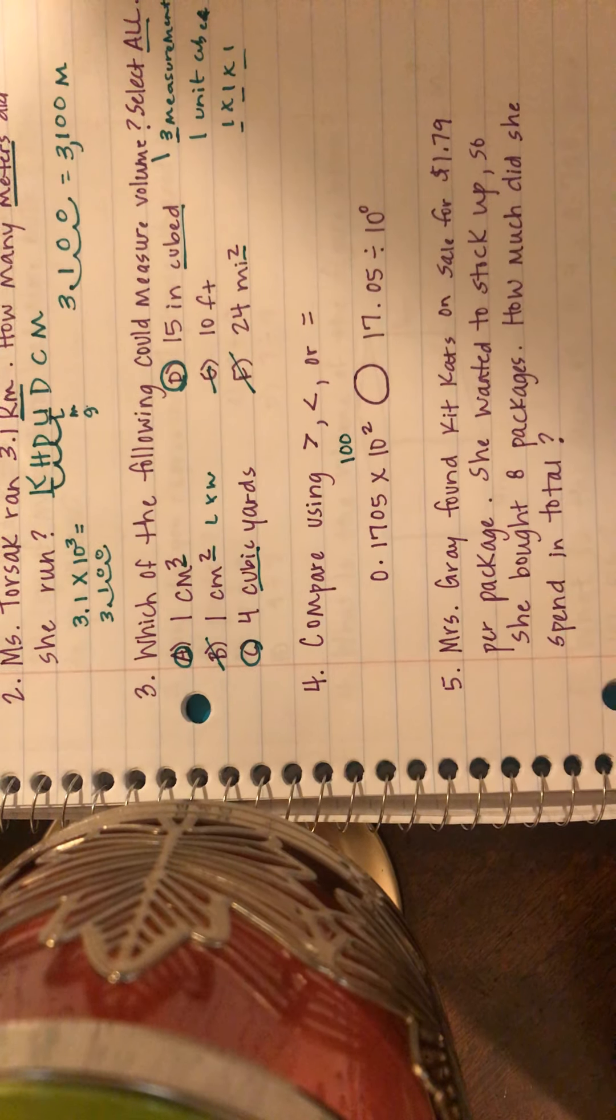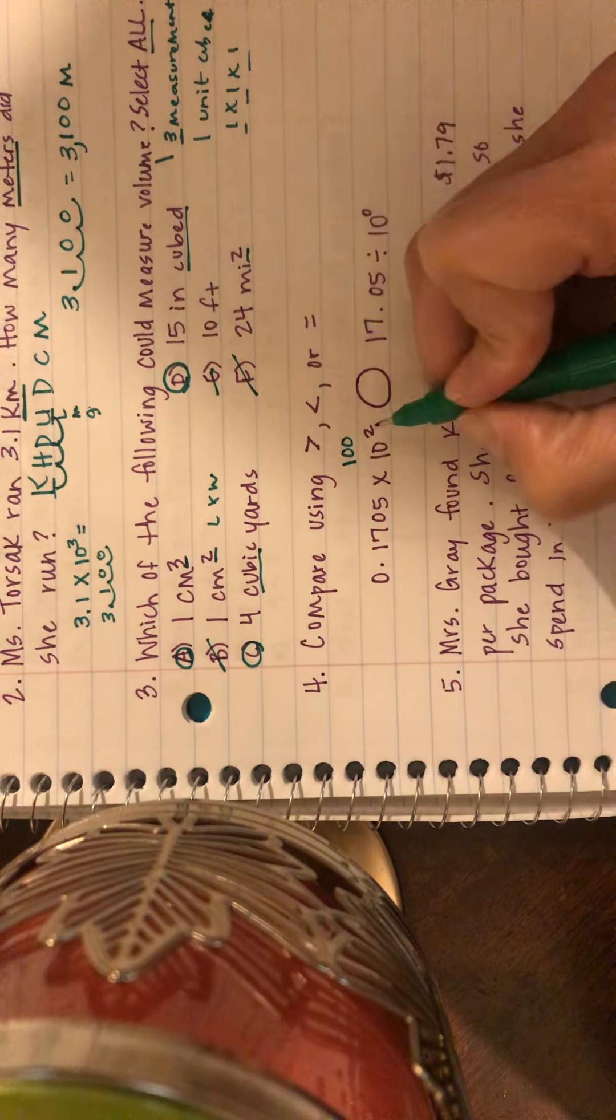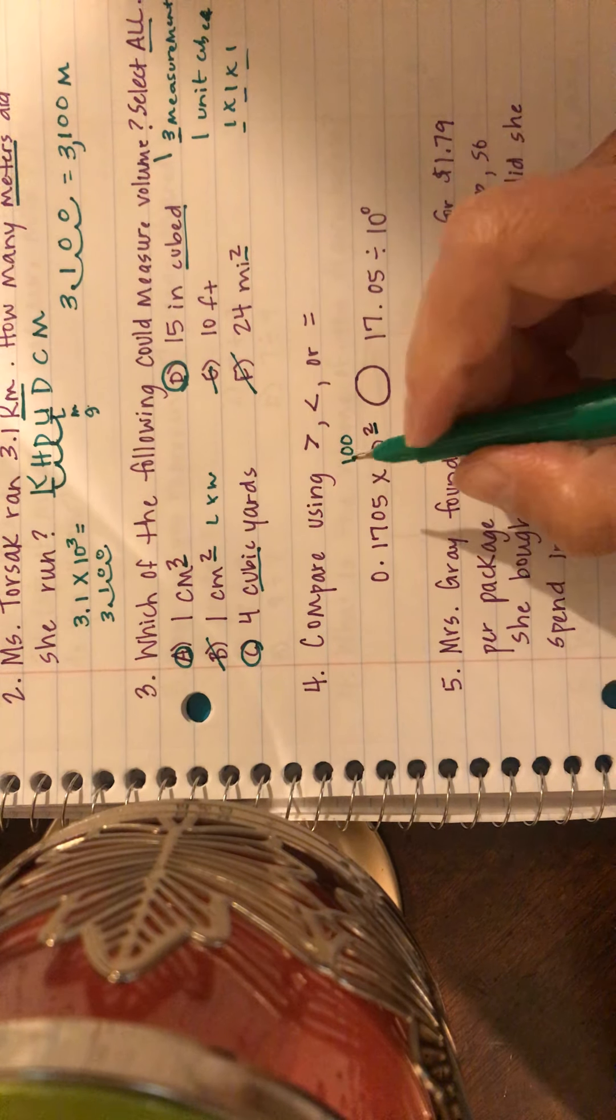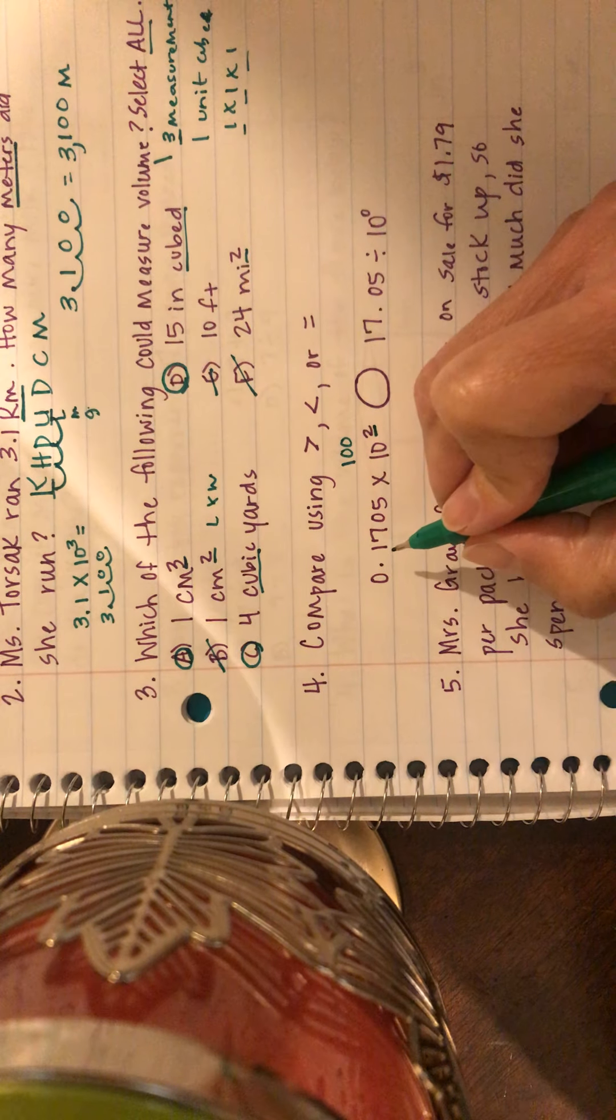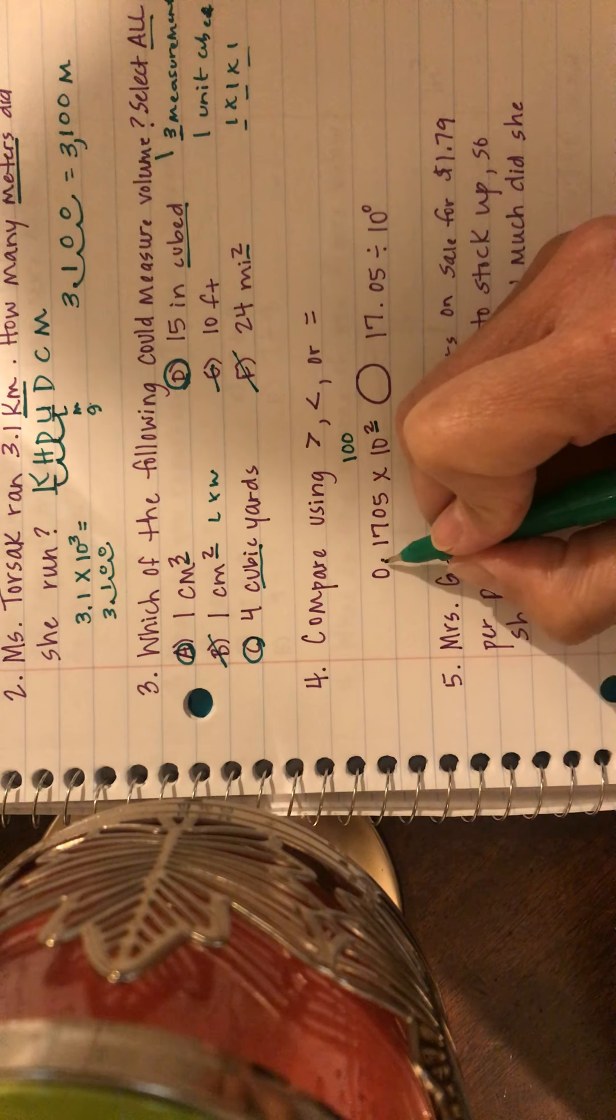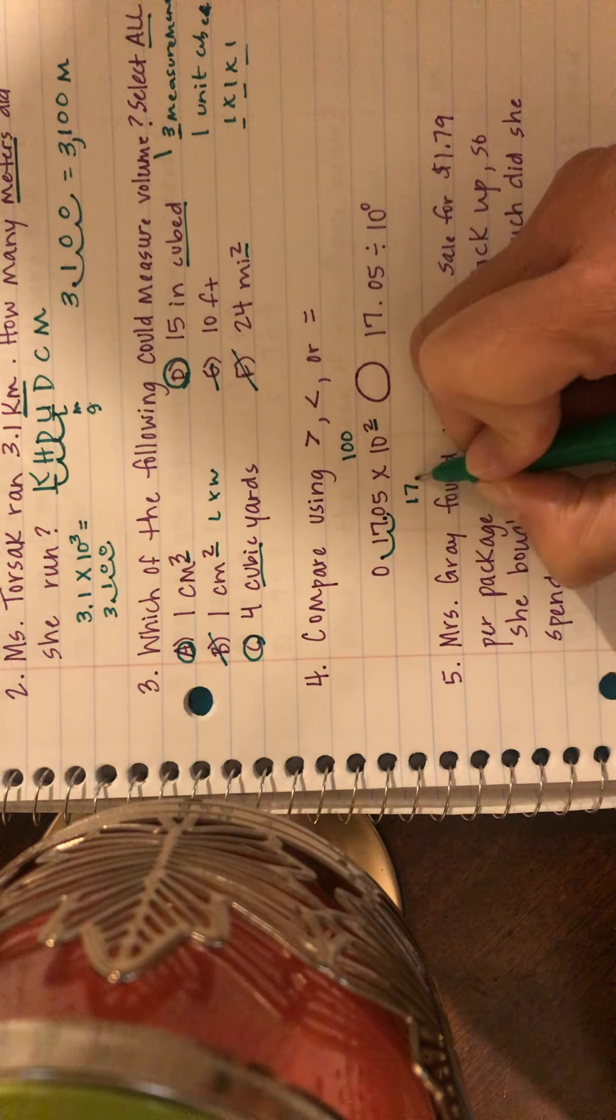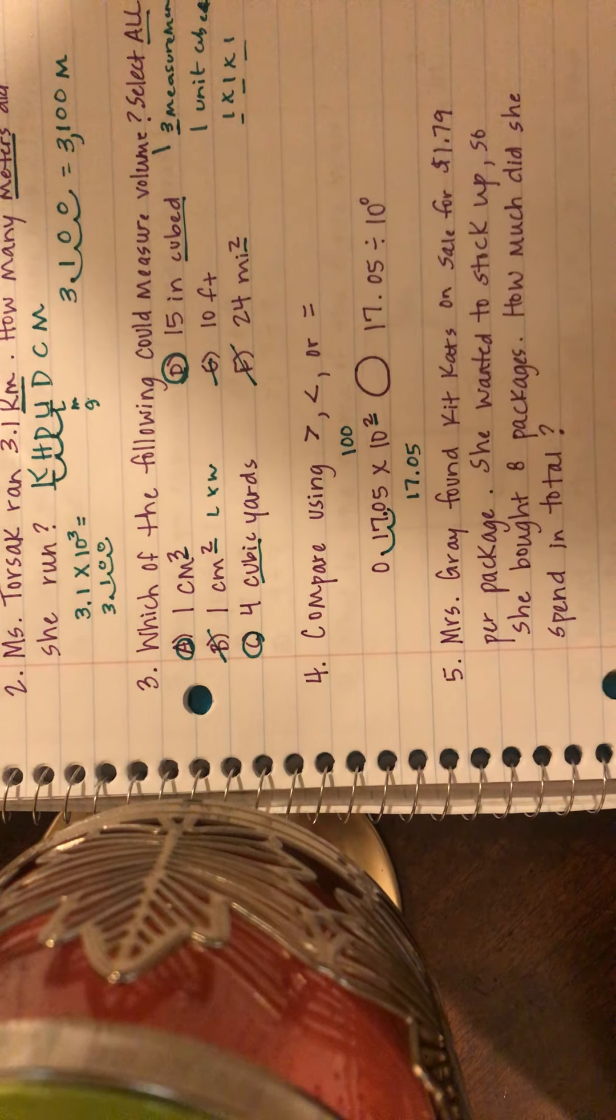When I multiply by a power of 10, I'm moving my decimal point to the right. So I'm going to make two hops, one, two, to the right, and now I have 17 and five hundredths, or 17.05.